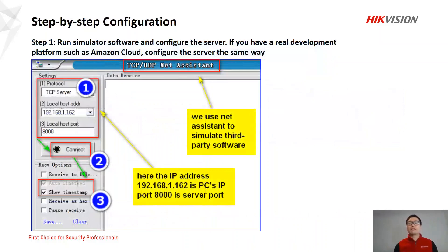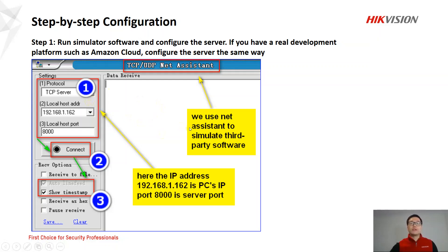In part three, it's about step-by-step configuration. Here we use the software named Net Assistant to simulate the server. If you have a real development platform such as Amazon Cloud, configure the server the same way as shown in the screenshot here. In step one, the IP address here is the PC's IP address — the PC acts as the server, and port 8000 is the server port. After configuration, click connect.